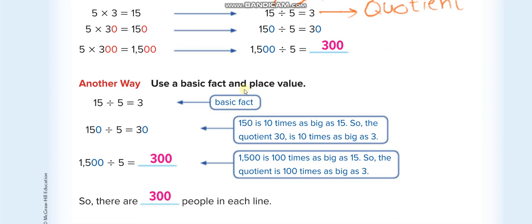The other way, using the basic factors, like the basic factors without the 0s. This one is the basic factor. You divide it directly, 15 divide 5 is 3. 150 divide 5, you remove the 0s. 15 divide 5, 3. And put the 0 back in the answer. 1500 divide 5, you remove two 0s this time and put it back in your answer.